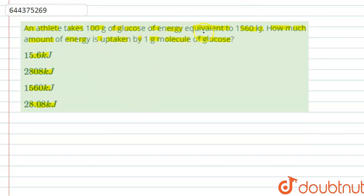100 grams of glucose requires energy. It means 100 grams of glucose of energy equivalent to 1560 kilojoules, so 100 grams of glucose equals 1560 kilojoules energy.